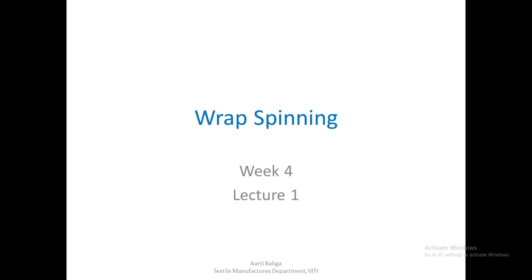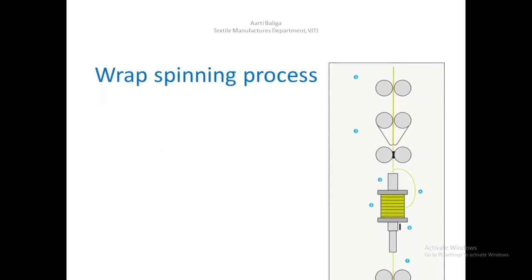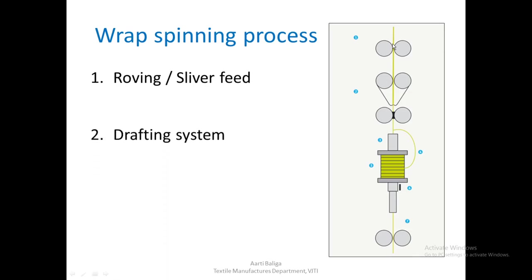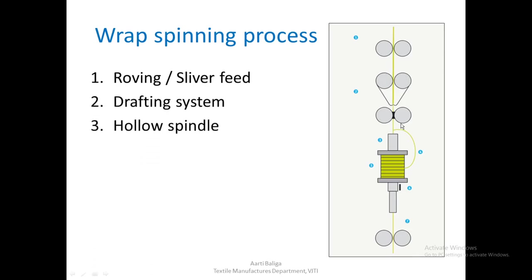Today we are going to see the wrap spinning process. This is the passage of yarn through wrap spinning. The roving or sliver being fed enters the drafting system and then goes into the hollow spindle.